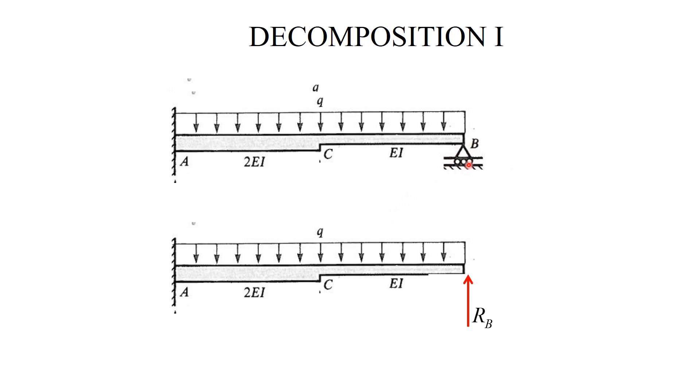I simply remove the roller at B and I replace it with the reaction force R sub B. This force is unknown, but the condition for finding this force is imposing the condition that the deflection at B in this beam is equal to zero, simply because it is equal to zero in the original beam. From now on, I will focus on this statically determined beam.